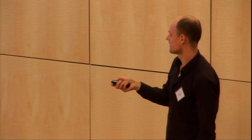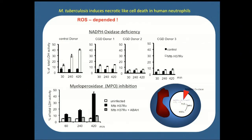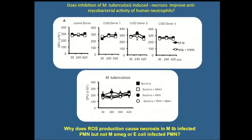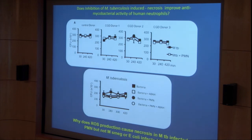I thought that by inhibiting early cell death I might be able to see bacterial killing, since we hypothesized that the reason neutrophils can't kill the bacteria is that they undergo this early cell death. However, I didn't find any reduction of bacterial survival using neutrophils from CGD donors, nor when I used the myeloperoxidase inhibitor. This was disappointing because I had hoped it would explain why I can't see any killing.